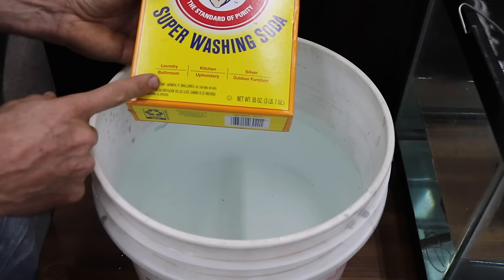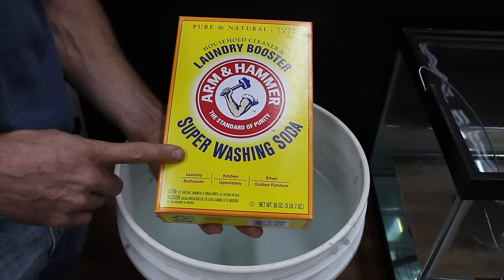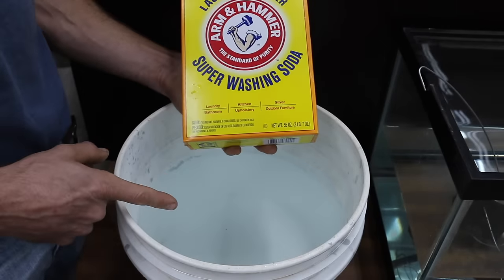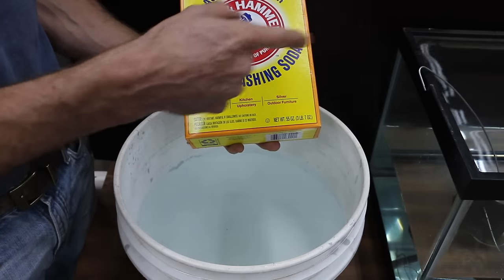We only need about a half a cup per five gallons of water. I'm gonna go ahead and use the entire box of sodium carbonate. A little extra won't hurt. Now this water is warm, so once I dump this in there I'm gonna mix it up real good and then I'll go ahead and dump it inside the aquarium.